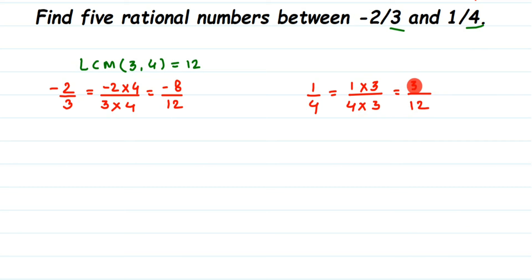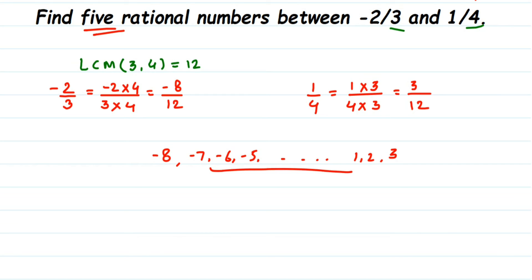Now the denominators are the same. Looking at the numerators, we have minus 8 and 3. Between these two numbers we want 5 rational numbers. We can see numbers like minus 7, minus 6, minus 5, and so on up to 1 and 2. We can pick any 5 of these numbers, keeping the denominator 12.